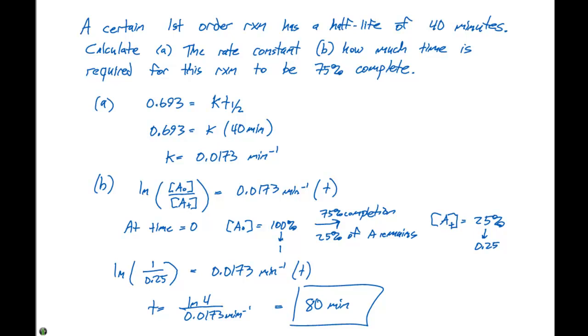In this particular question, we're asked for two things. One, we're given some half-life information, which allows us to calculate the rate constant. This is very important, because once we have that rate constant, we can use this integrated rate law to figure out concentrations at any given time.